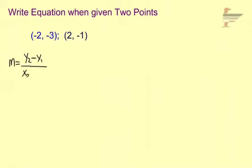So our slope formula, y2 minus y1 over x2 minus x1. Here's our x1, y1, x2, y2 points.